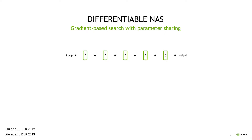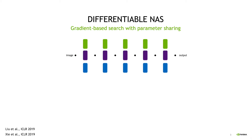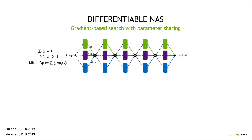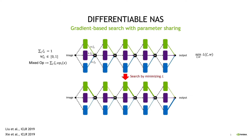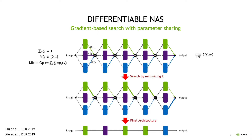To better understand differentiable NAS, let's consider this example where we would like to choose operations for each layer of a five-layer network. The basic idea of differentiable NAS is to create a network by stacking mixed operations. In each mixed operation, we apply all the candidate operations in each layer and we linearly combine their outputs. The mixing coefficients, zetas here, are designed to act as selection parameters. Since everything in this network is differentiable, we can perform architectural search by minimizing a loss function such as cross-entropy loss. The final architecture is then created by choosing the operation that obtains the largest coefficient in each layer.